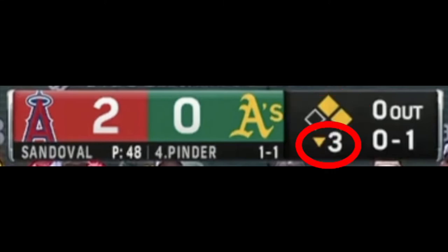This tells me that it is the bottom of the third. The arrow pointing down means that it's the bottom of the third. If the arrow was pointing up, it would be the top of the third. So I know that since the home team always bats in the bottom of the inning, the A's are currently at bat. I also know that we're pretty early in this game, because we're only in the third inning, and a regulation baseball game is nine innings. There are no outs so far in the inning, and with runners on first and second, that's a pretty good situation to be in if you're the Oakland A's.